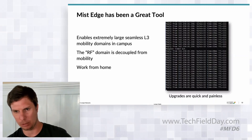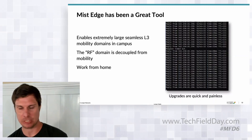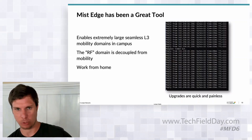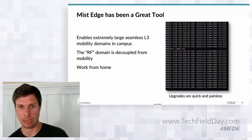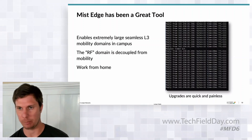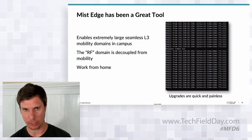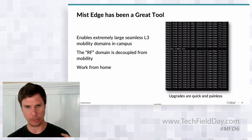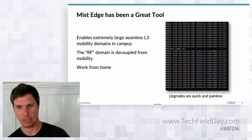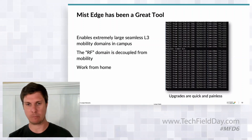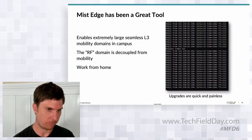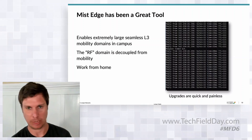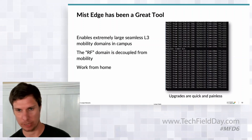MIST Edge is invaluable for campus deployments. It enables a seamless L3 mobility domain across an entire campus without worrying about spanning VLANs. The beauty is decoupling the RF domain from the mobility domain — from an RF perspective, you can segment if you want, or just have large RF domains. We also use MIST Edge for work-from-home, forming IPsec tunnels and provisioning APs very easily.